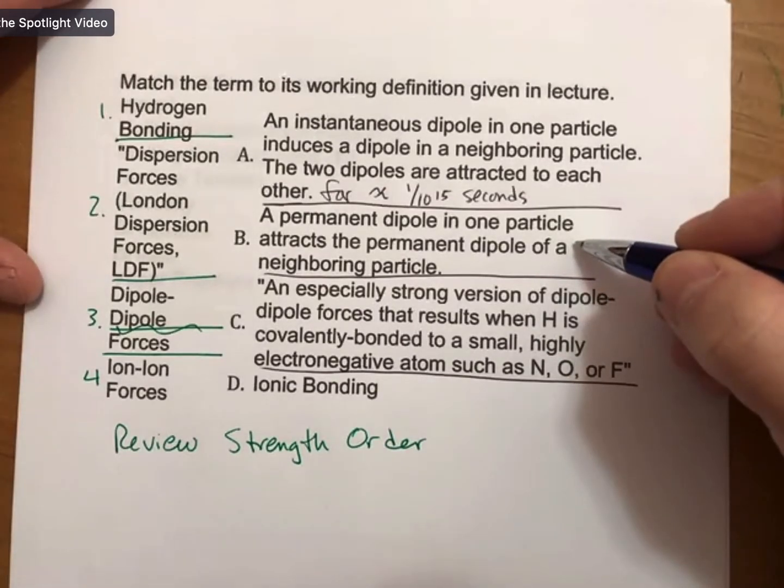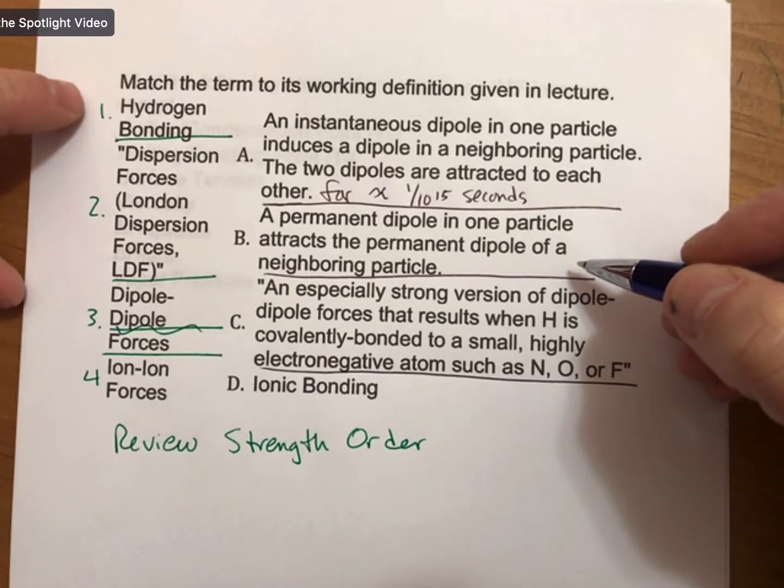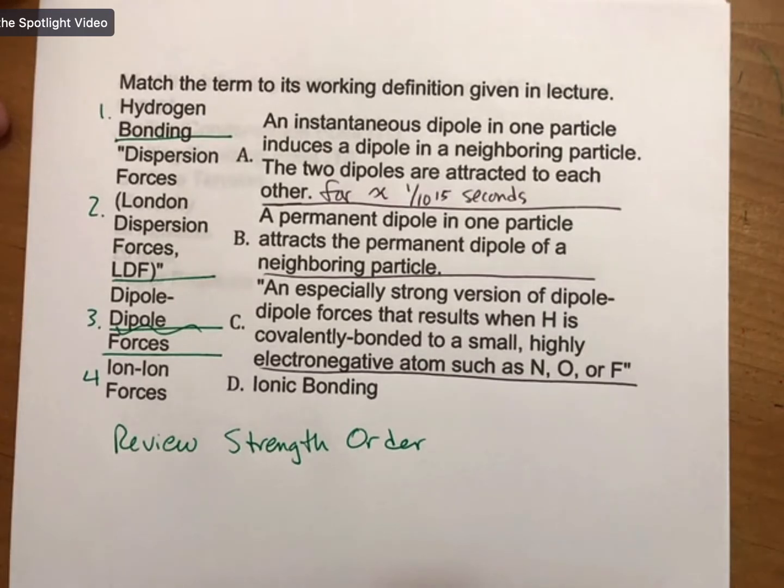How about B? A permanent dipole in one particle attracts the permanent dipole of a neighboring particle. Somebody else please, which one of these? One, two, three, or four, or by name? Professor, is it dipole-dipole forces? Thank you Daryl, it is.